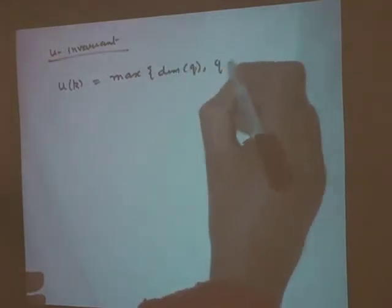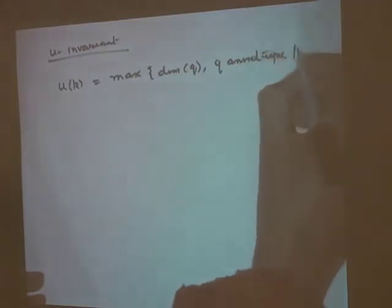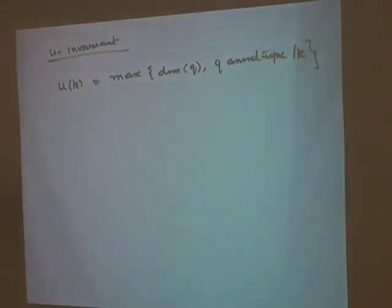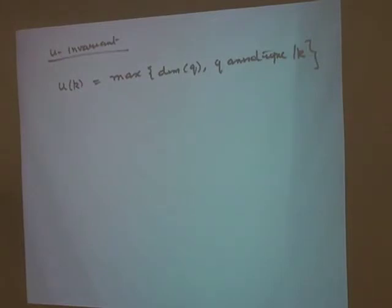Now we go on to the next invariant: the u-invariant. This is an integer-valued invariant associated with fields. u(k) is simply defined to be the maximum dimension of q, where q ranges over all anisotropic quadratic forms over k. This u-invariant is not so interesting for fields with orderings in this definition, but let's look at some examples. u(ℂ) = 1, u(finite field) = 2. Every three-dimensional quadratic form over a finite field has a non-trivial zero.